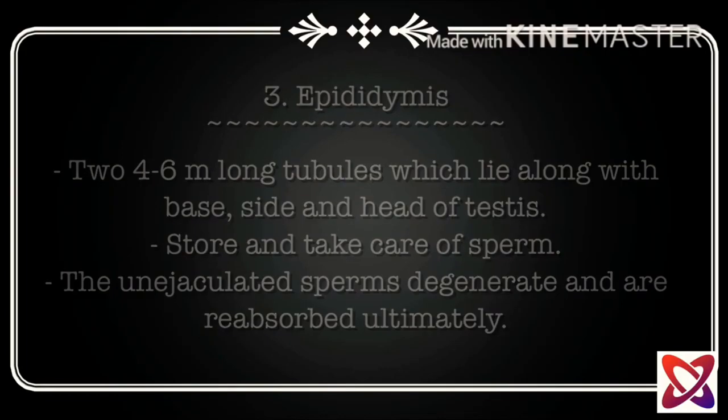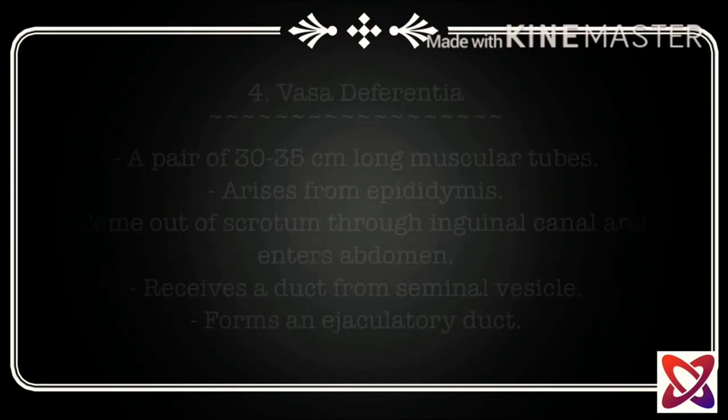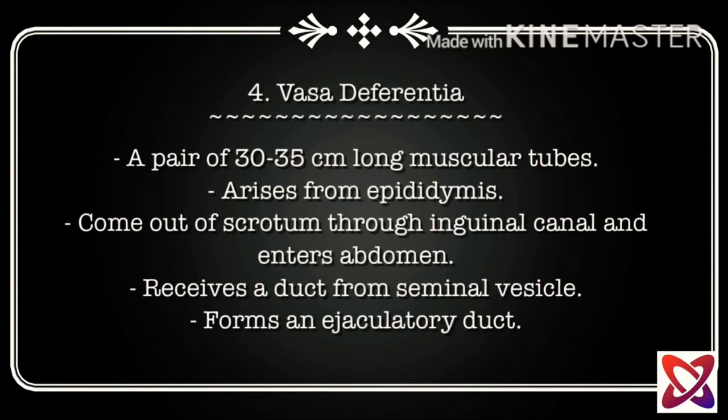The fourth component is the vas deferentia. It is a pair of 30 to 35 centimeter long muscular tubes. It arises from the epididymis, comes out of the scrotum through the inguinal canal, and enters the abdomen. It also receives a duct from the seminal vesicle.